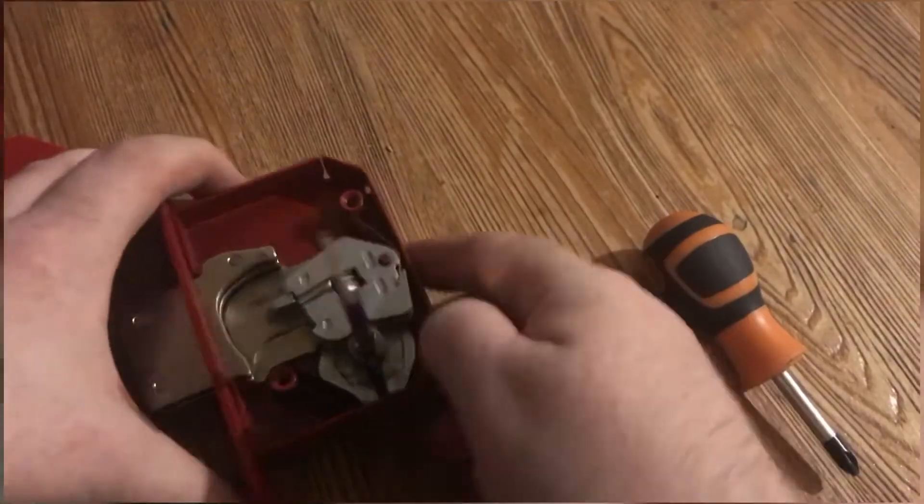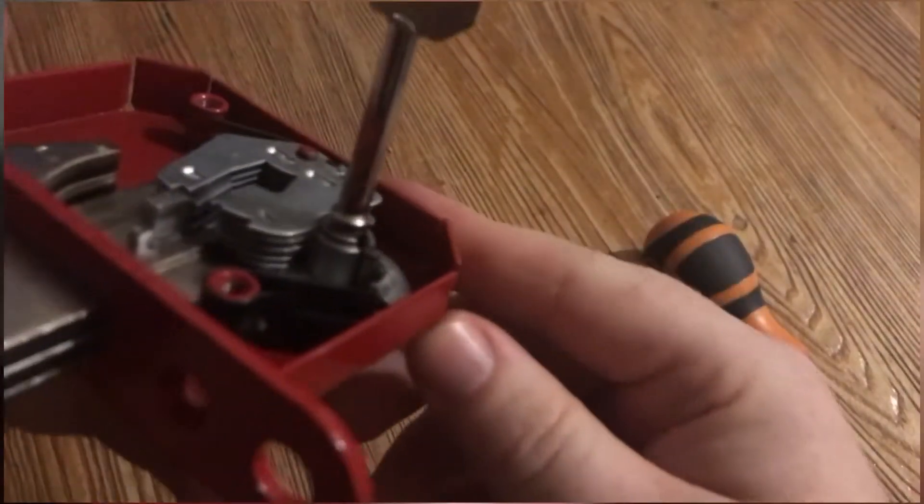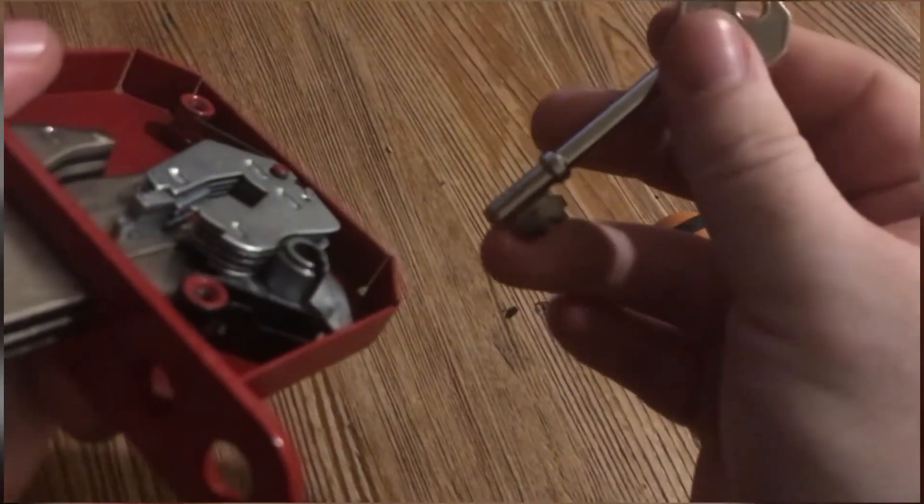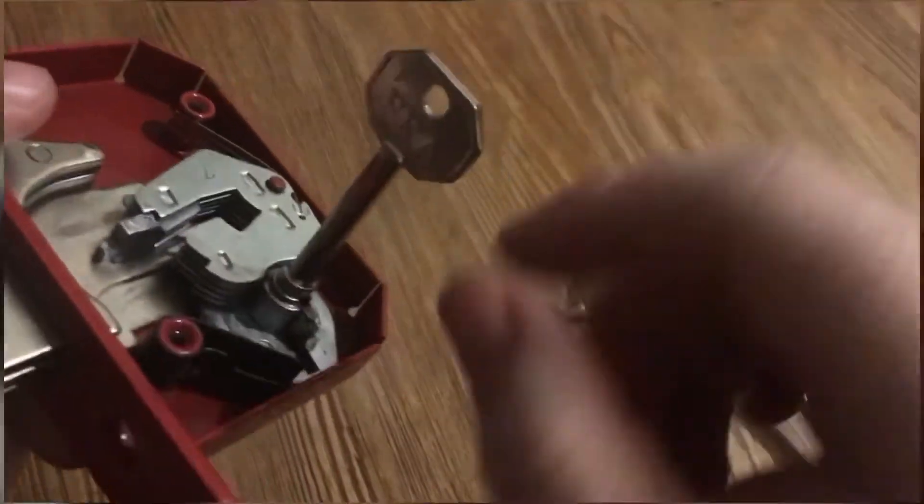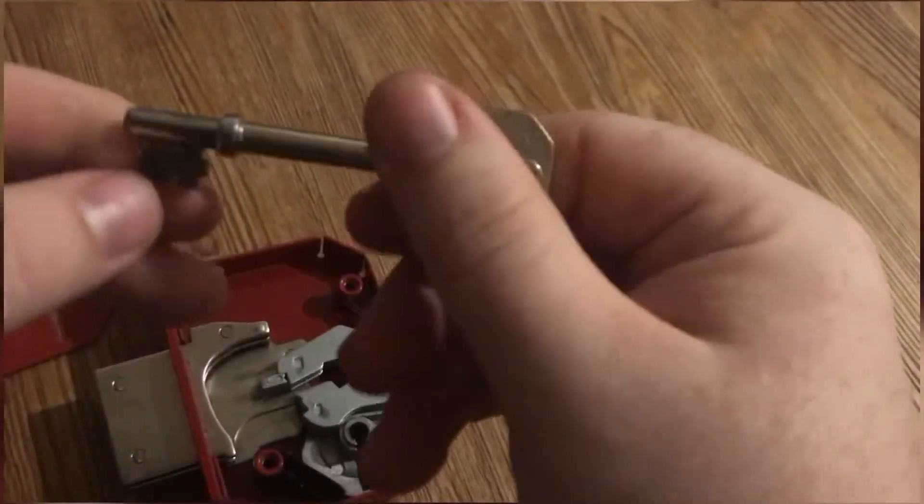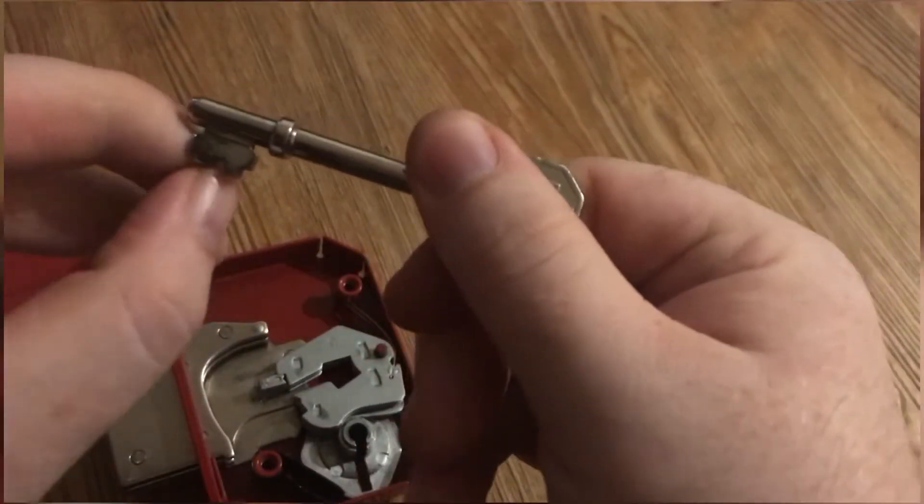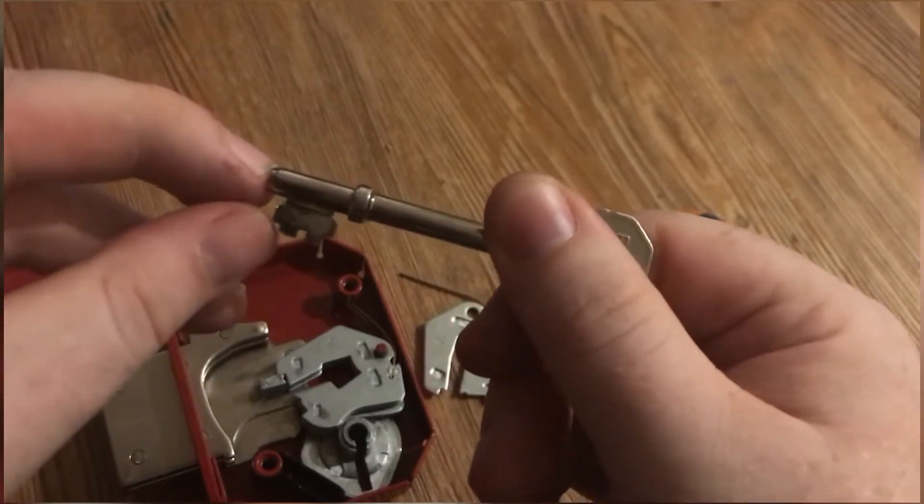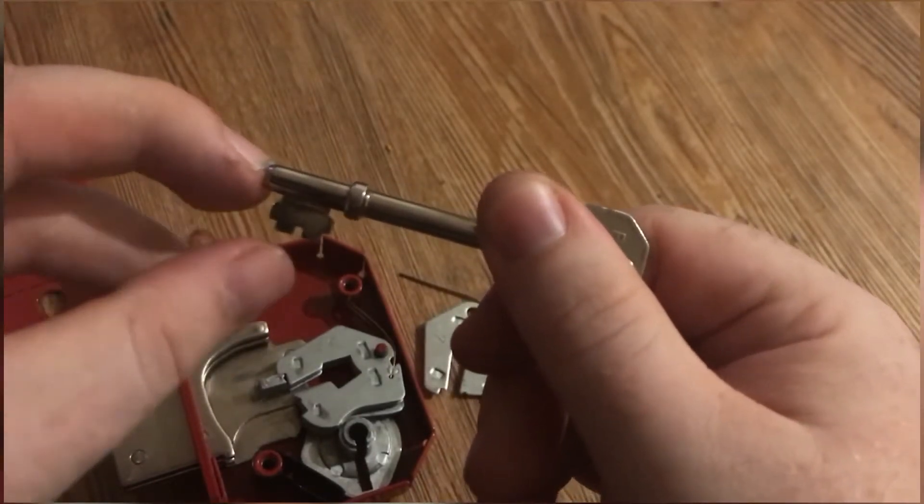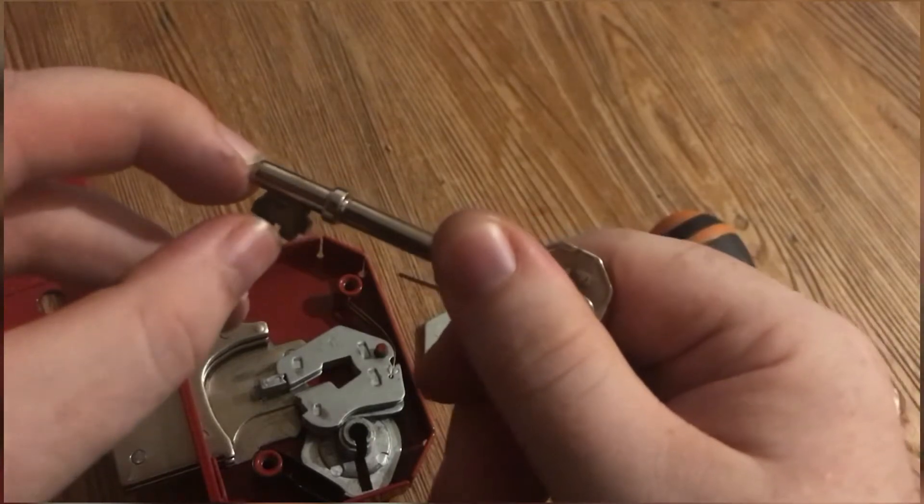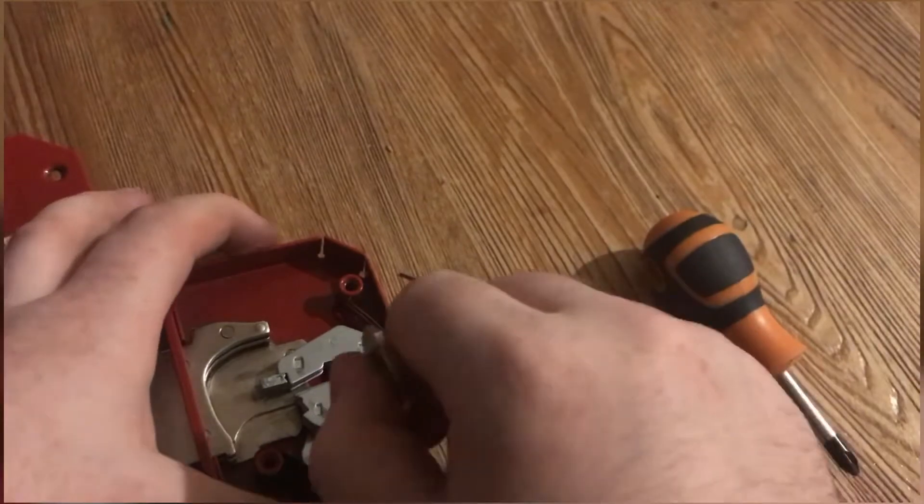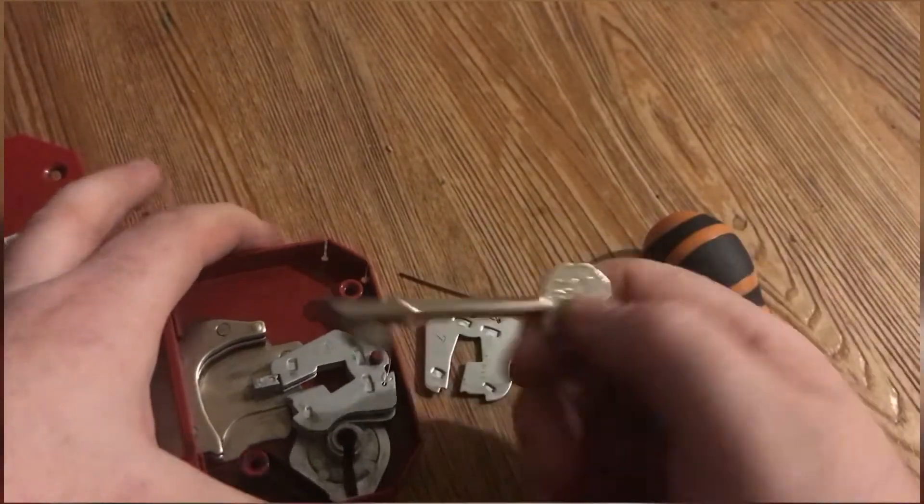As you can see there, what that does is it allows the count to be one, two, three, four, five. Now you'll always have your number five and your number three the same. This is to make sure you can open it from one side and the other.